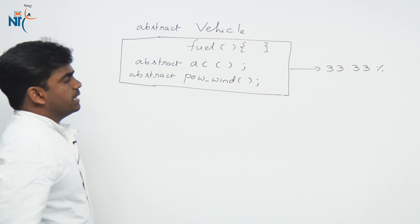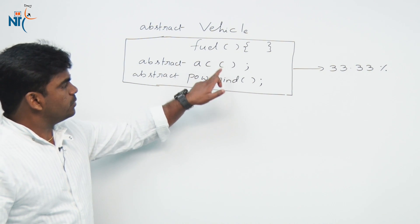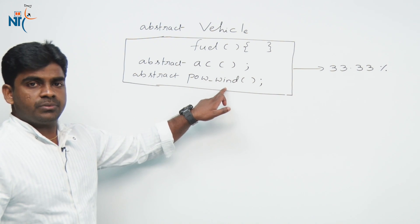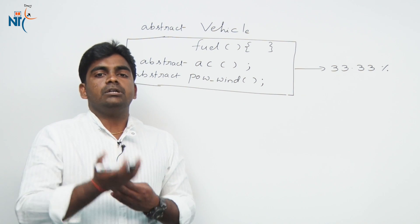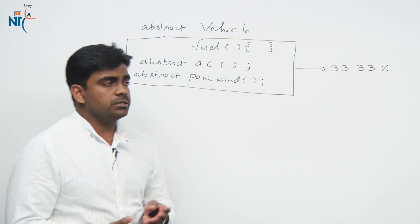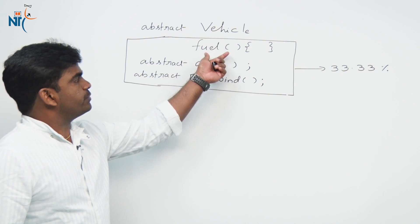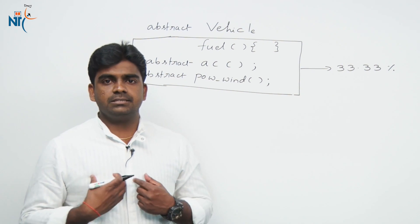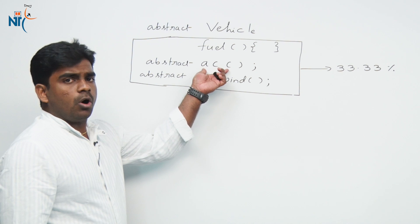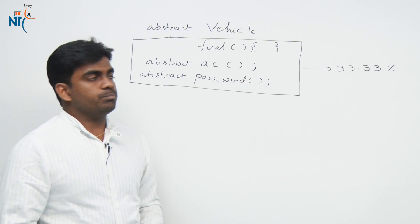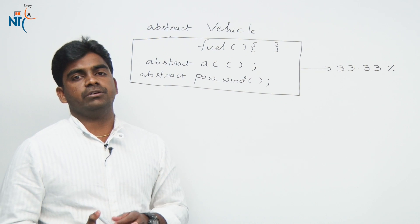An abstract class contains two types of methods: one is a concrete method and the second is an abstract method. Whenever we are unable to provide the definition — like in this situation — it becomes an abstract method. For all types of vehicles, fuel is mandatory and we can define that. But fixing AC to all kinds of vehicles is impossible, and power windows too — that depends on the type of vehicle.